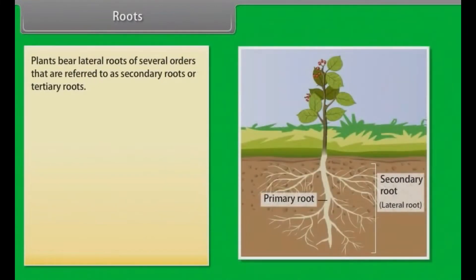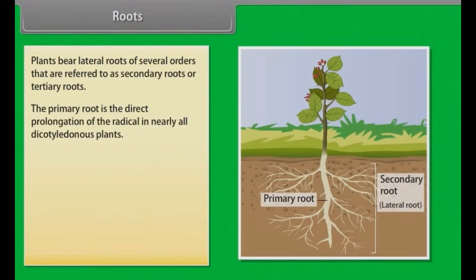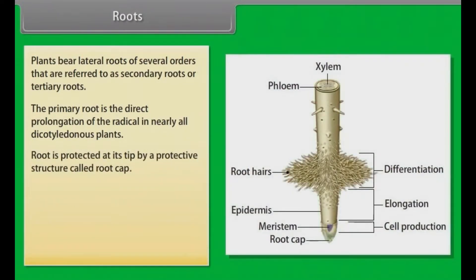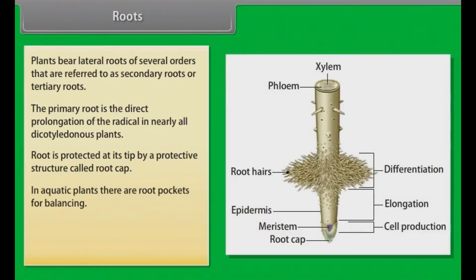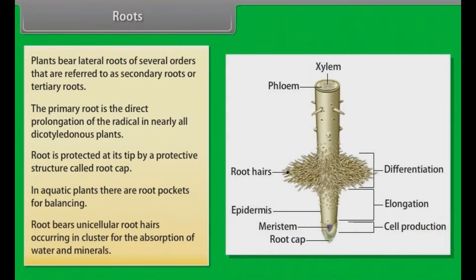Plants bear lateral roots of several orders, referred to as secondary roots or tertiary roots. The primary root is the direct prolongation of the radicle in nearly all dicotyledonous plants. Root is protected at its tip by a protective structure called root cap. In aquatic plants, there are root pockets for balancing. Root bears unicellular root hairs occurring in clusters for the absorption of water and minerals.